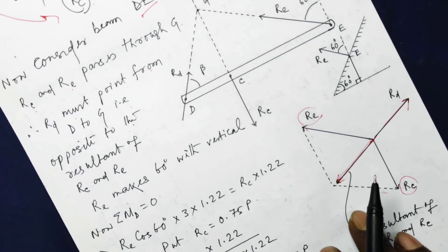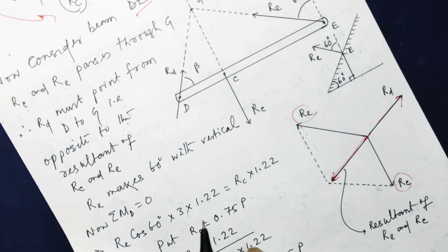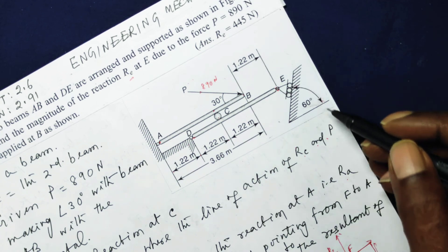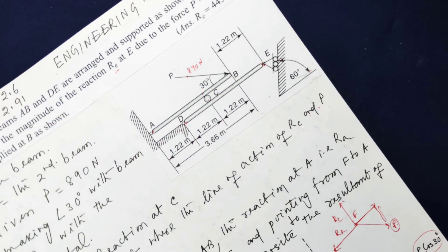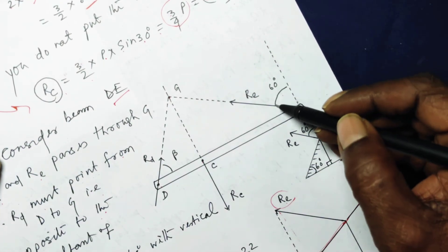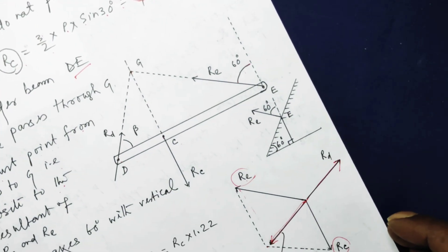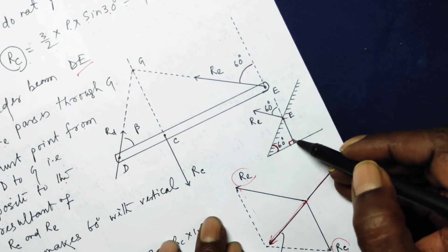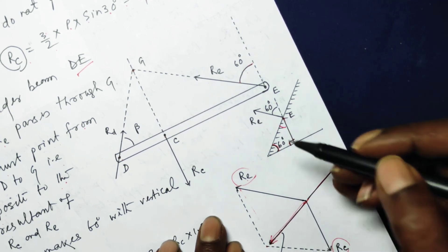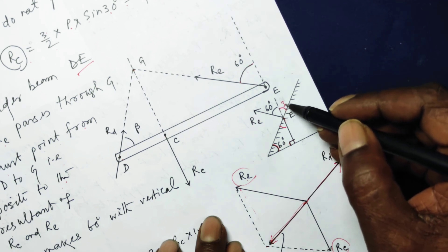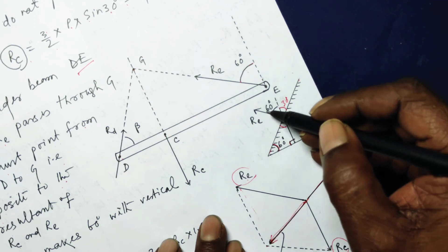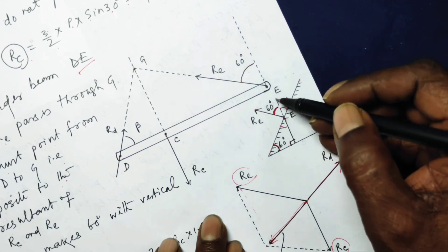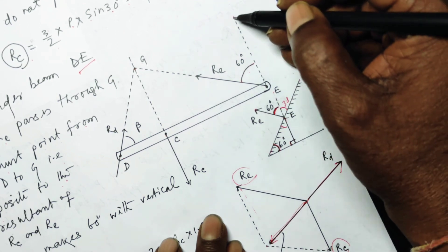From the original diagram, the angle at E is given as 60 degrees. If we drop a perpendicular, this gives angles of 90, 60, and 30 degrees at that vertex. By vertically opposite angles, RE makes an angle of 60 degrees with the vertical line at point E.